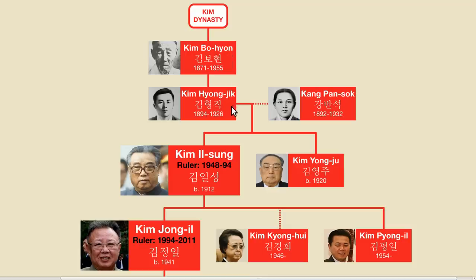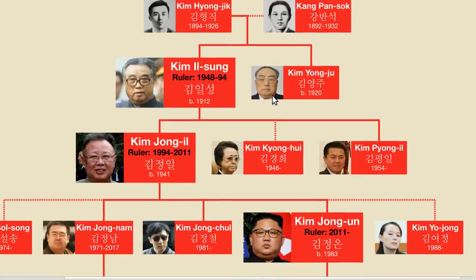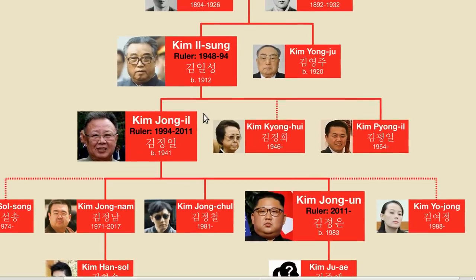When these first two generations were born, North Korea was still an independent kingdom, but by the time Kim Il-sung was born, it had become part of the Japanese empire. The Japanese empire disintegrated at the end of World War II, and Korea became divided, with the North being influenced by the Soviet communists and the South by the United States. In 1948, the Democratic People's Republic of Korea was established, and Kim Il-sung was chosen as its first leader. Soon after, a cult of personality developed around him, and the Kim dynasty became a hereditary dictatorship.